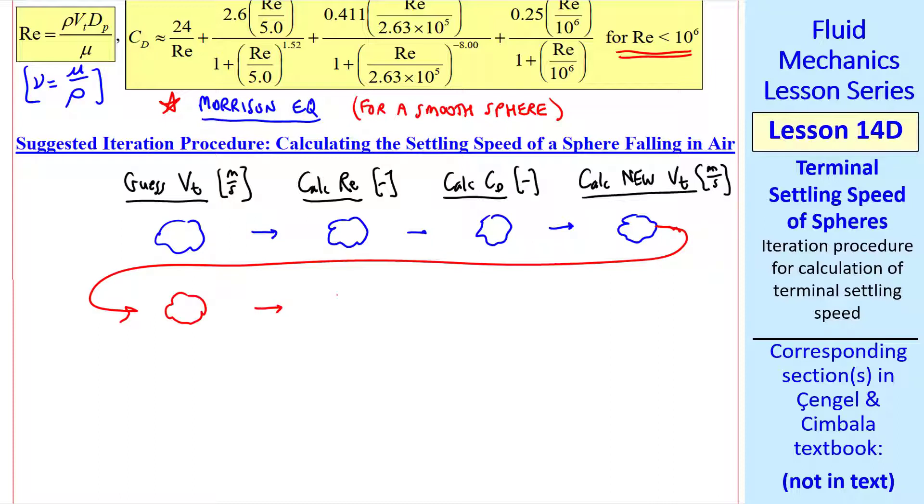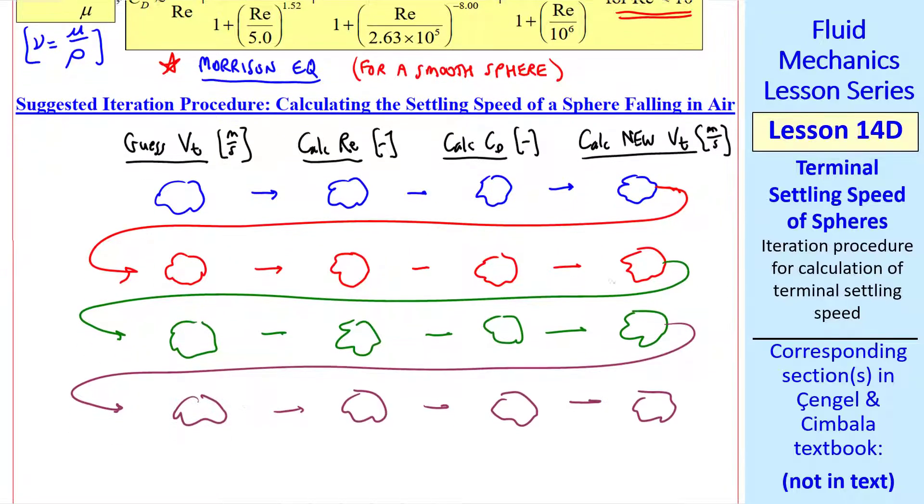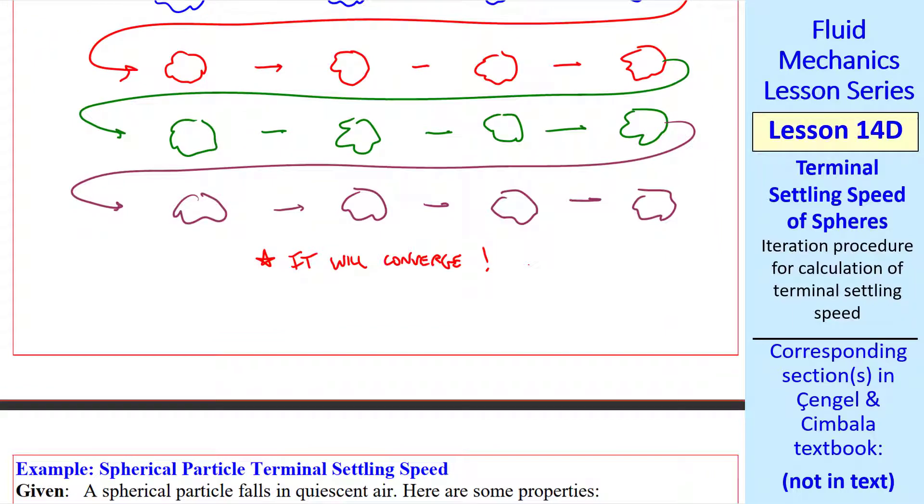With this new vt, you calculate a new Reynolds number, a new cd, and another vt. Use that vt as your next guess, and you continue the process, always using your most recent value. And eventually, it will converge, often in only a few iterations.